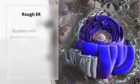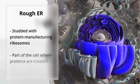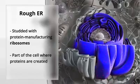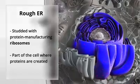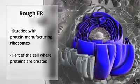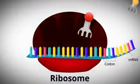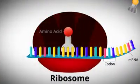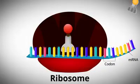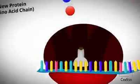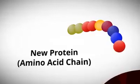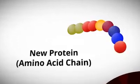The rough endoplasmic reticulum is studded with protein-manufacturing ribosomes. A ribosome is the part of a cell where proteins are created. A sequence of DNA becomes transcribed into a sequence of amino acids, and the ribosomes compile these amino acids in the correct order to form proteins. This is a process known as translation.